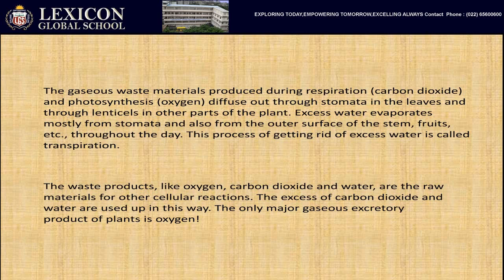Excess water evaporates mostly from the stomata and also from the outer surface of the stem and fruits throughout the day. This process of getting rid of excess water is called transpiration. The waste products like oxygen, carbon dioxide, and water are the raw materials for other cellular reactions, so the excess carbon dioxide and water are used up in this way. The only major gaseous excretory product of plants is oxygen.